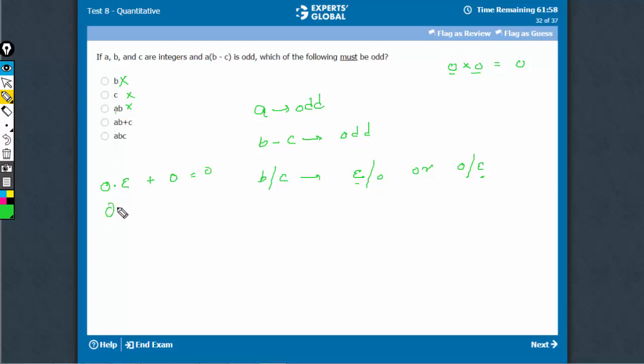In the other case, when B is odd, C has to be even. In this case also, odd plus even equals odd. So this is definitely odd.